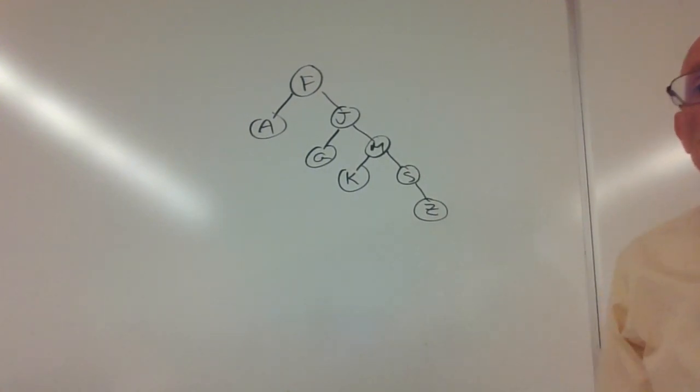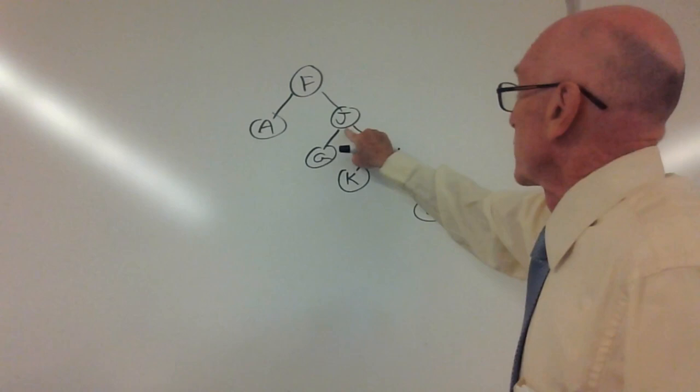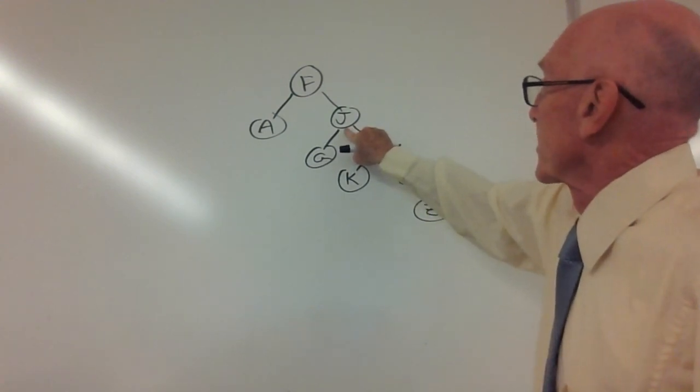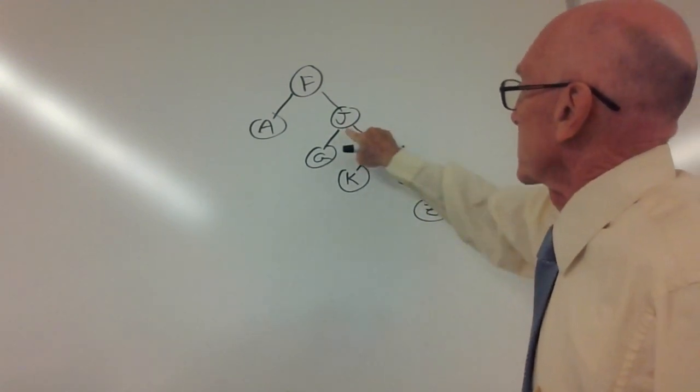We also did removing things from this tree. So the first thing, for example, we wanted to do was remove Japan. What we then did was we found the successor node. The successor node of J is K.